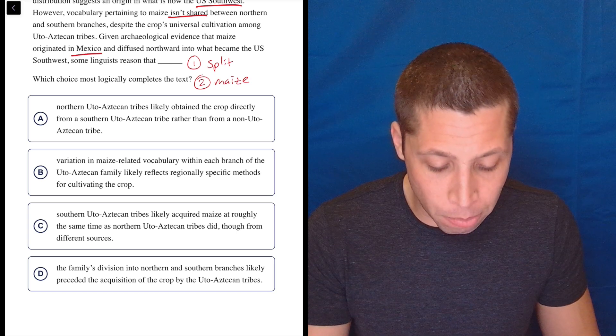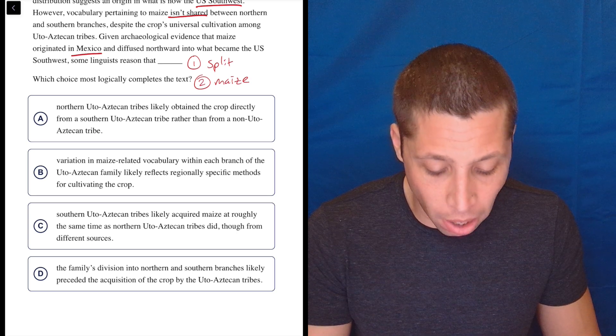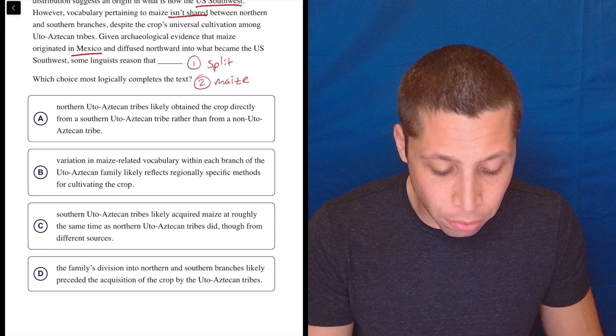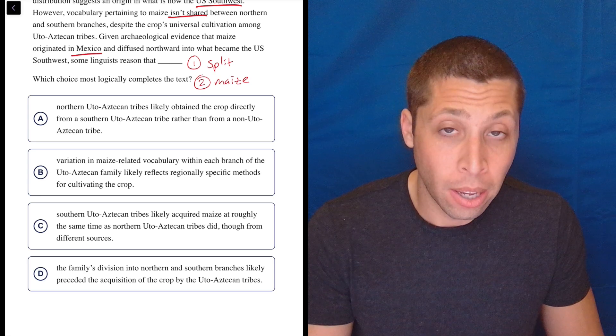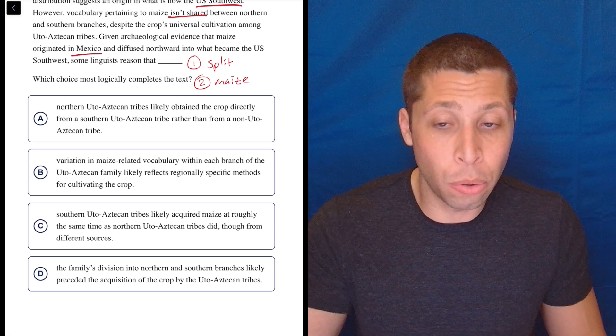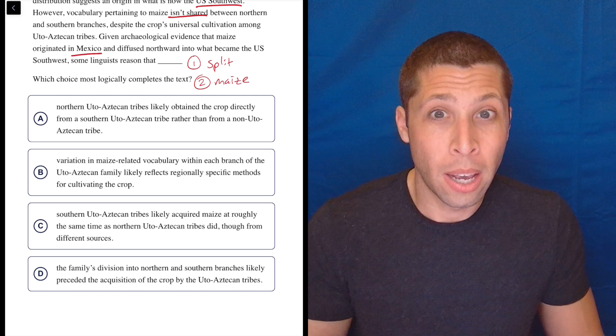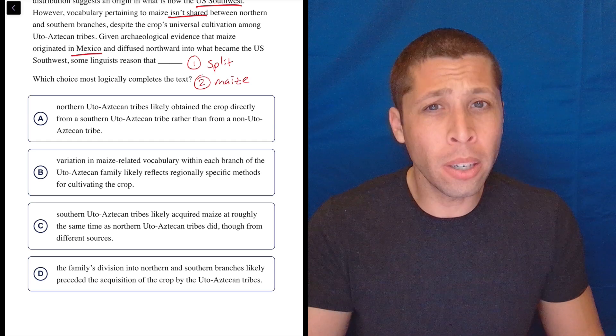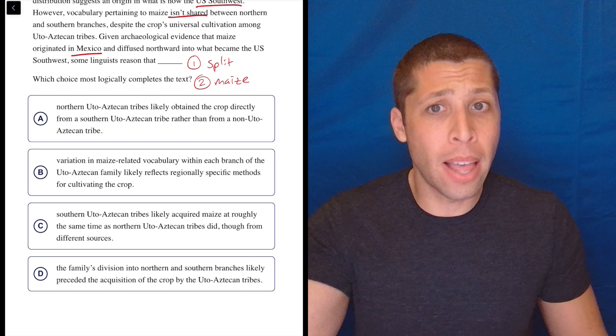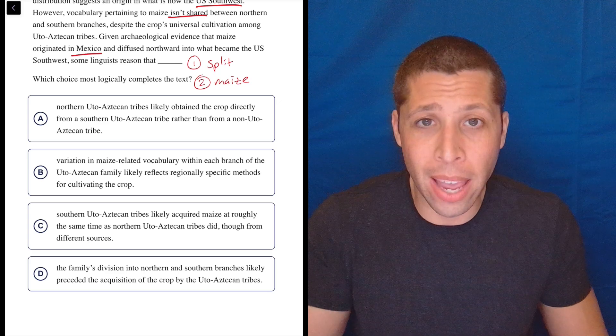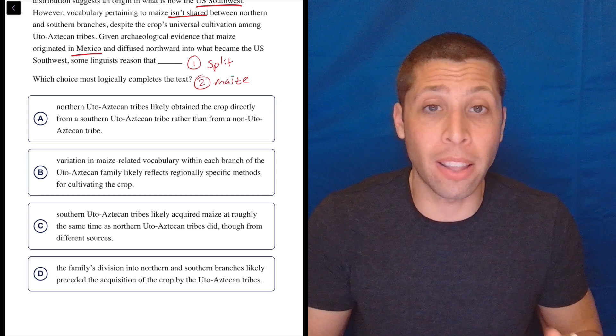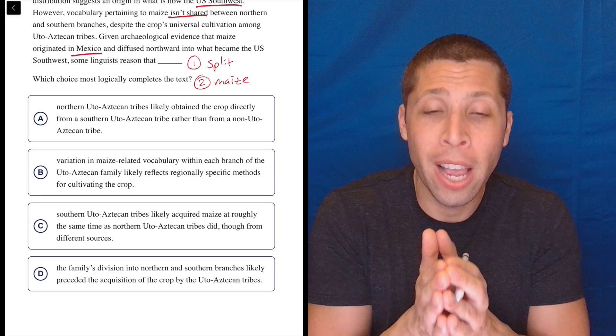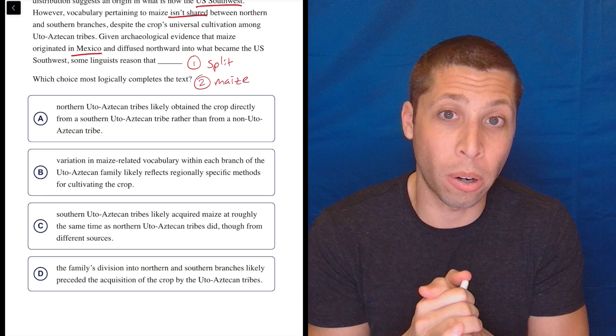So A, northern Udo-Aztecan tribes likely obtained the crop directly from a southern Udo-Aztecan tribe rather than from a non-Udo-Aztecan tribe. Well, if you got it from people who spoke a similar language to you, then shouldn't you have the same word? If you got it from them, then you'd have the same word for that thing. So that doesn't explain the fact that they're the same language, and yet they have completely different words for maize.